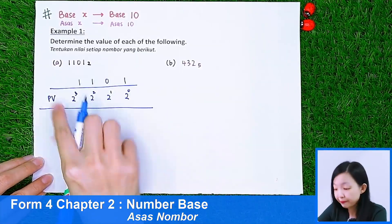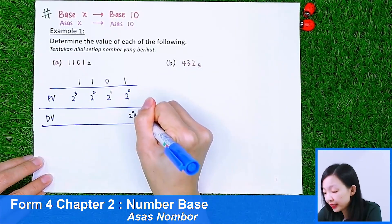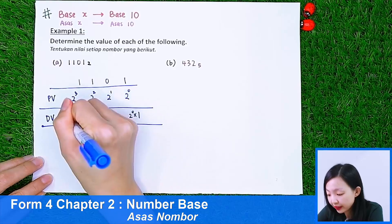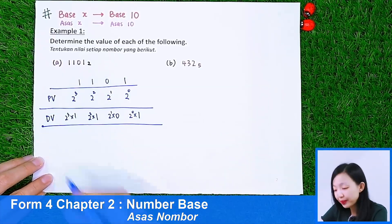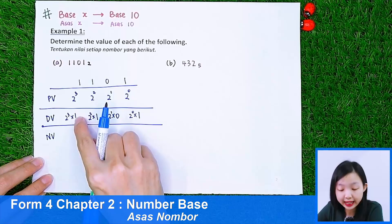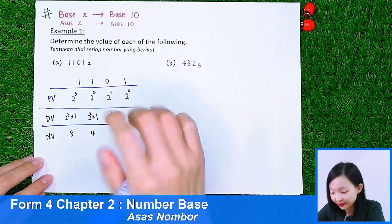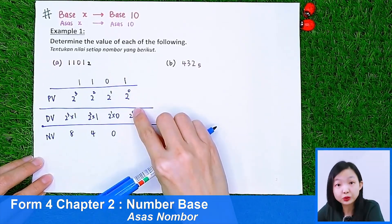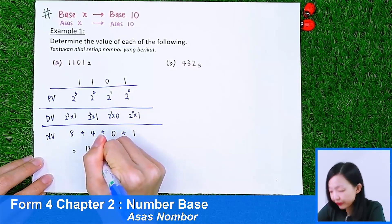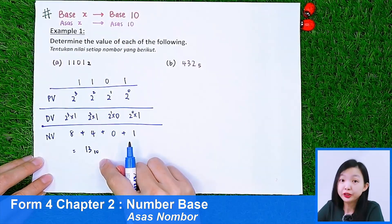Now for the digit values: 2 to the power of 0 times 1; 2 to the power of 1 times 0; 2 to the power of 2 times 1; 2 to the power of 3 times 1. Then we find the number value by adding all of these: 2³ × 1 = 8, 2² × 1 = 4, 2¹ × 0 = 0, 2⁰ = 1 × 1 = 1. Adding them all up, we get 13 in base 10. This is how we change from number base 2 to number base 10.